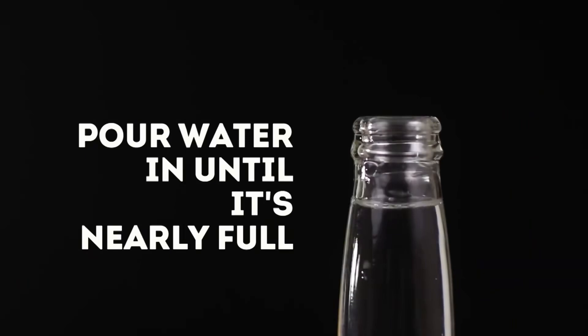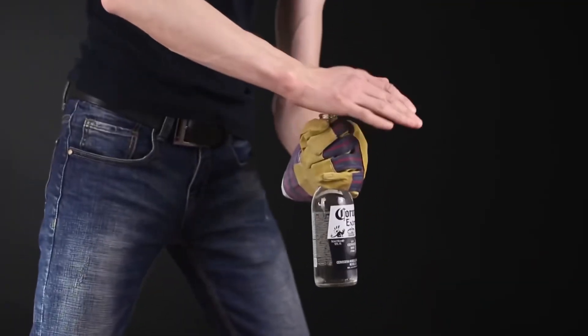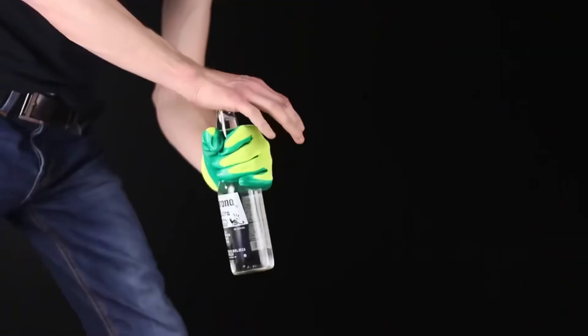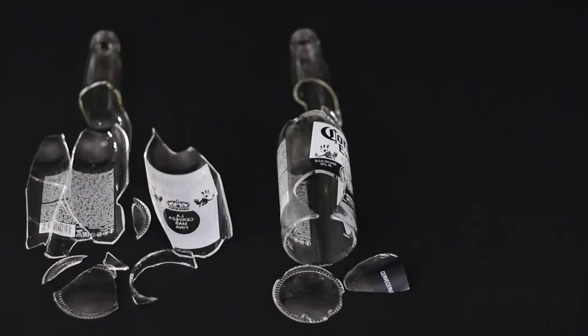Fill the bottle with water almost to the neck. And then we deliver a powerful blow with the palm of our hand. Okay, one more. The bottom of the bottle is knocked out, although perhaps not only the bottom. The pressure inside just breaks the bottle. Look what happened to them.